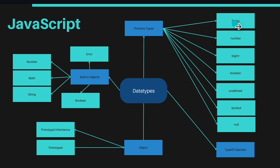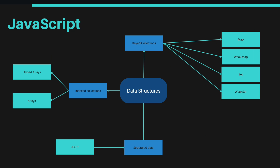After primitive types, learn about type operators. Sometimes you receive data from an API that looks like a number but is actually a string, so you need the typeof operator to check the data type. Then comes objects — understand prototypal inheritance and prototype. Also cover built-in objects: Error, Boolean, Number, Math, and String. You need to understand all of these, their default values, and how they work. These are the most important things you'll encounter when actually working on projects.